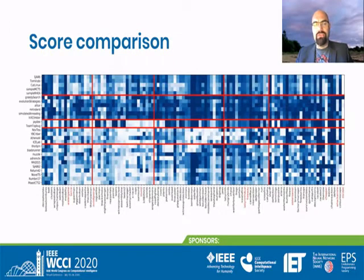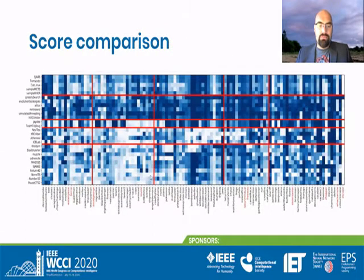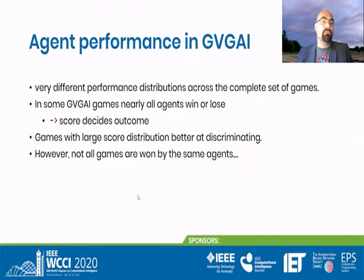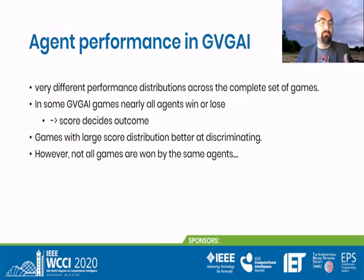If we look at the score of all AIs on all games, they sometimes confirm the story and sometimes tell a different story. A game like Invest, which is very much on the right in win rate, shows up much more in the middle and has a much more differentiated outcome. But in general, we can conclude just from this chart that there are different performance distributions across the set of games — some GVGAI games where nearly all agents win or lose, and then the score decides the outcome. But there are also some games that tell us very little and don't really help us tell the AIs apart. And that's not what we want — we want games with large score or win distributions, because they are better at discriminating.